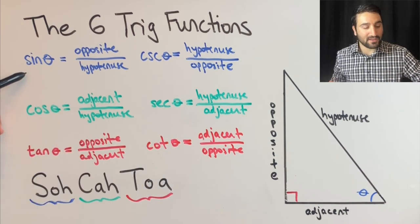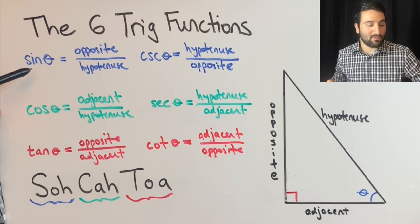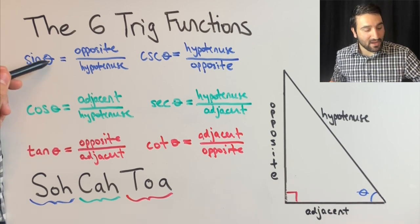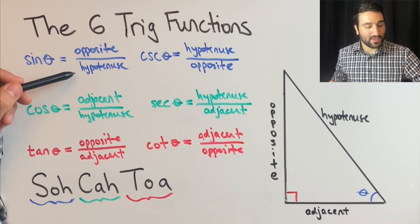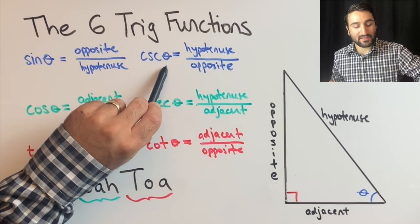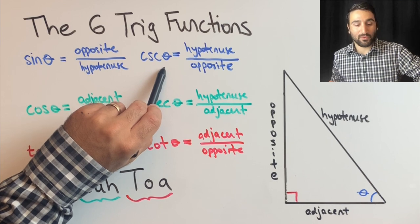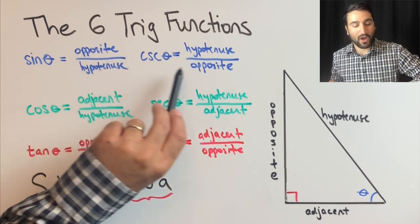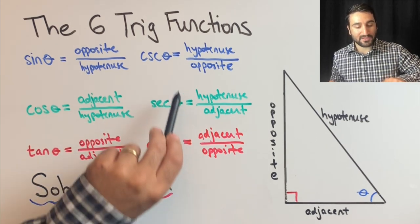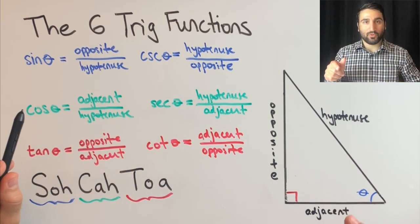and cosine's reciprocal is secant. So if you see, sine - this is something that you're going to have to memorize here. Sine of the angle theta is equal to opposite over hypotenuse. So if that's the case, cosecant theta will be its reciprocal, equal to hypotenuse over opposite. And all of these follow the same reciprocal rule.